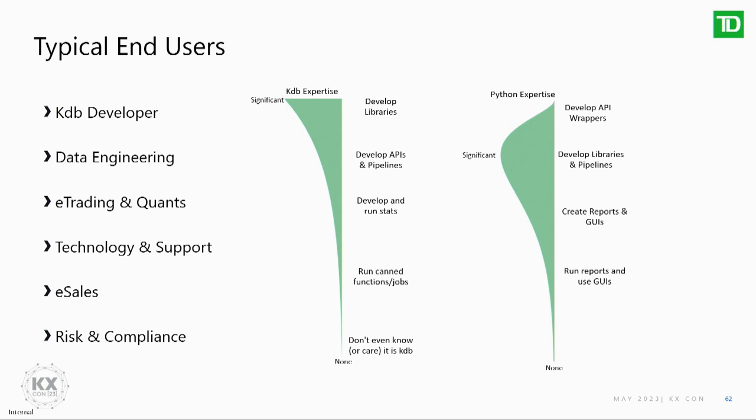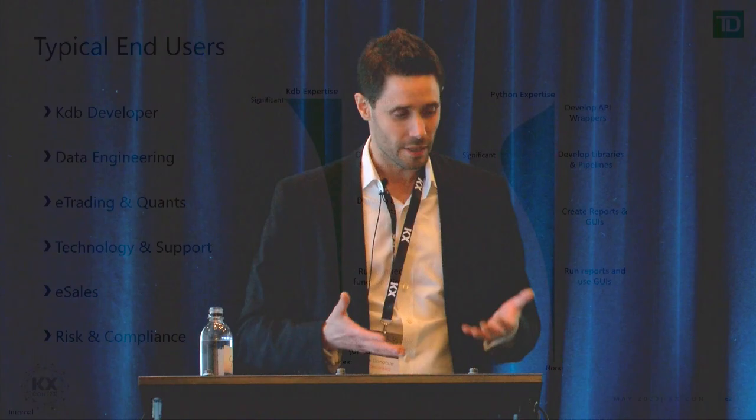Contrasting to Python: KDB developers generally don't know that much Python; your data engineering people are usually where you find the most expertise, and those are the ones developing libraries and pipelines. E-trading and quants are often creating reports or GUIs based off data from the pipelines and APIs — the visualization part is really important. Technology support is often just using tools that others have generated, maybe making a couple of changes, and risk and compliance are usually just ticking a box.